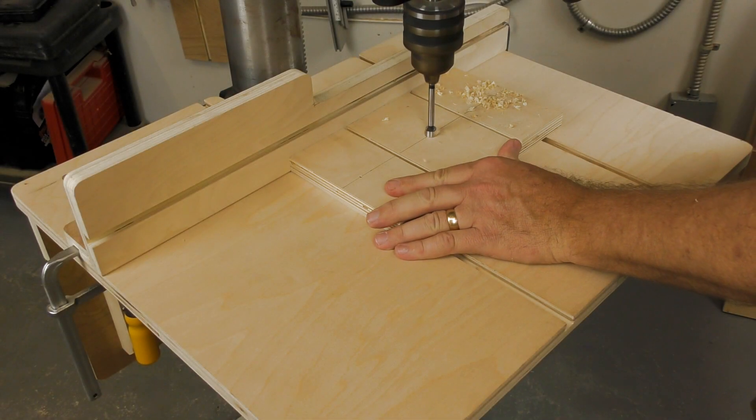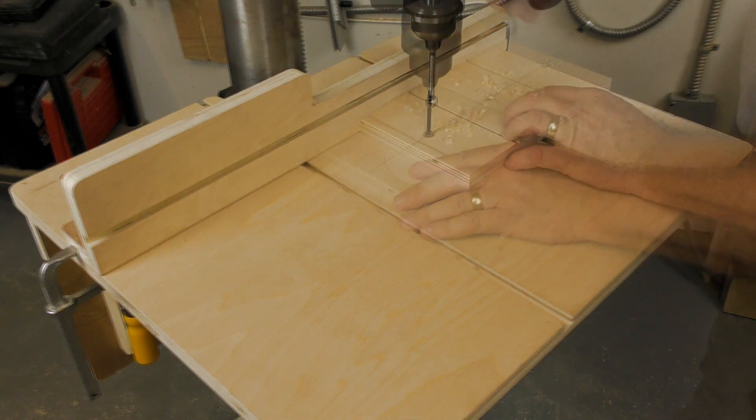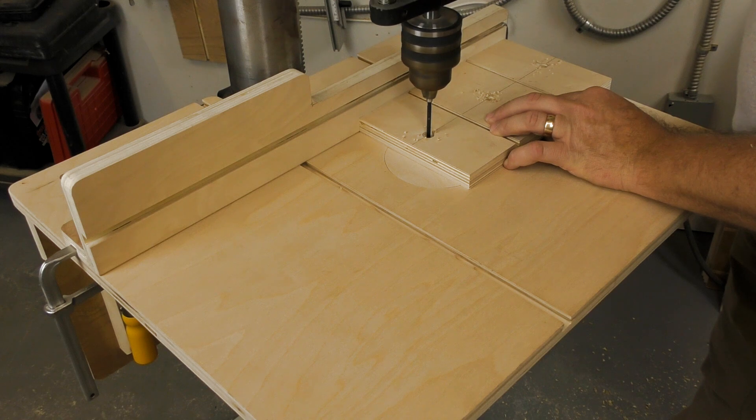Next, the standard holes for mounting the zero-play guide bar are drilled into the base. These are half-inch counterbores with a quarter-inch through-hole drilled 3 inches in from one of the long edges.